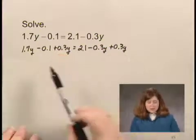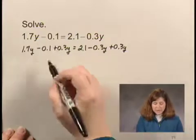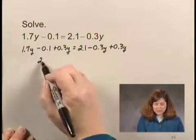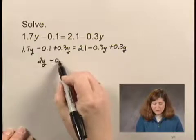Now I can combine like terms. 1.7y plus 0.3y is 2y. So that gives me 2y and then I still have minus 0.1.